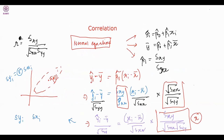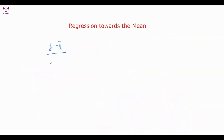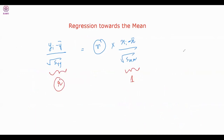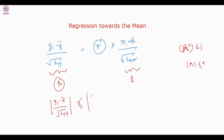Now going back to our earlier result: (ŷᵢ − ȳ) / √SYY = r · (xᵢ − x̄) / √SXX. Since r² ≤ 1 and |r| ≤ 1, the modulus of the standardized ŷᵢ is actually less than or equal to the modulus of the standardized xᵢ.